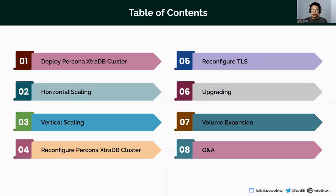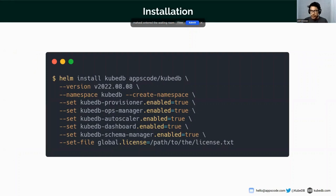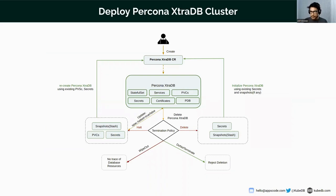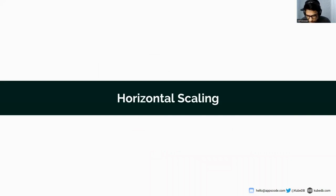This is the table of contents — we will talk about these topics today. Before that, you have to install our KubeDB Helm chart to start with the Percona XtraDB cluster. This is the diagram of the Percona XtraDB custom resource, which I also showed in the previous webinar. You can also take a look from our documentation. Let's start with the topics.